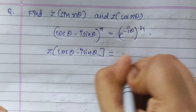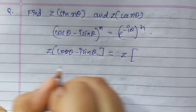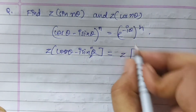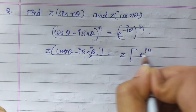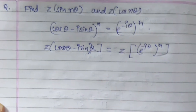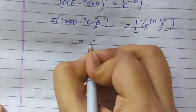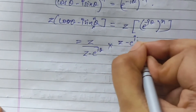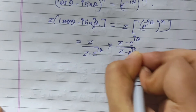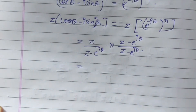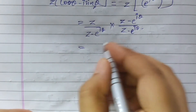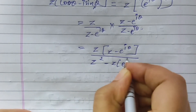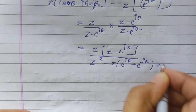We get Z of (cos nθ minus i sin nθ) equal to Z of e to the power minus i theta, to the power n. That equals z divided by z minus e to the power i theta, multiplied by z minus e to the power negative i theta divided by z minus e to the power negative i theta. We will do rationalization, so we get z times (z minus e to the power i theta) divided by z squared minus z times (e to the power i theta plus e to the power minus i theta) plus 1.